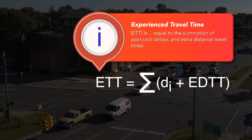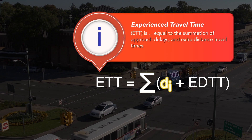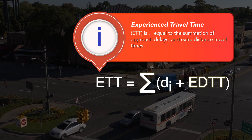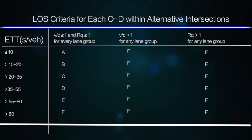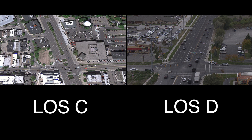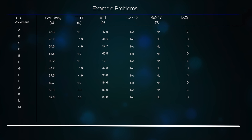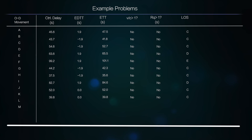Extra distance travel time is the time required to drive this extra distance. Experienced travel time is equal to the summation of approach delays and extra distance travel times. Facility-wide level of service is based on the average amount of experienced travel time per vehicle. Thanks to the elimination of left turn phases, facility-wide level of service is often better for an MUT intersection when compared to a conventional intersection. HCM example problems are available for MUT intersections with either signalized or unsignalized U-turn crossovers.